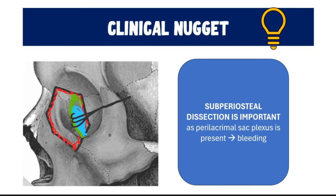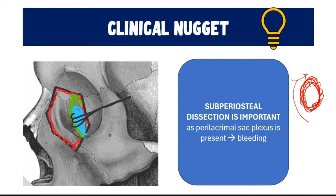It is of utmost importance to reflect the sac together with the periosteum during surgery — this process is called subperiosteal dissection. This technique is highly recommended as it reduces the risk of bleeding from the perilacrimal sac plexus, a complication that could occur if we attempt to reflect only the sac. Around the lacrimal sac is this perilacrimal plexus, and if the sac is not removed together with the periosteum, you will touch this plexus and cause bleeding.